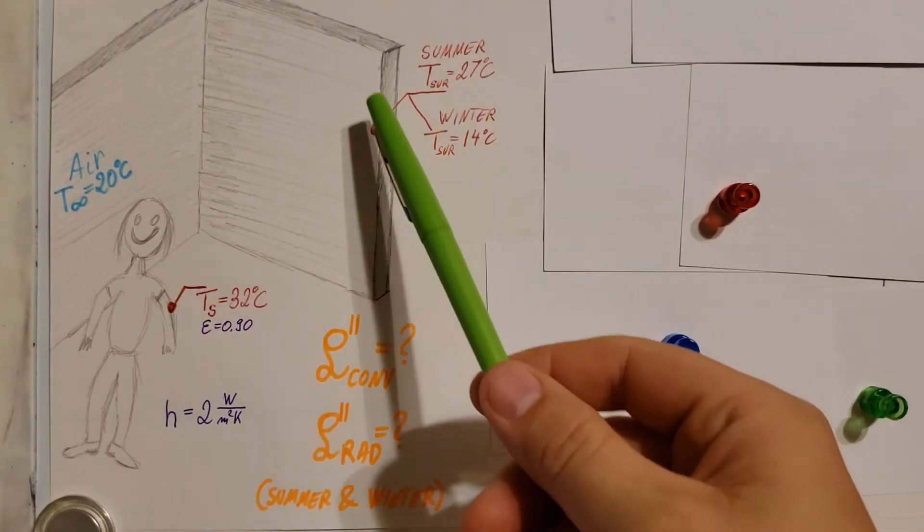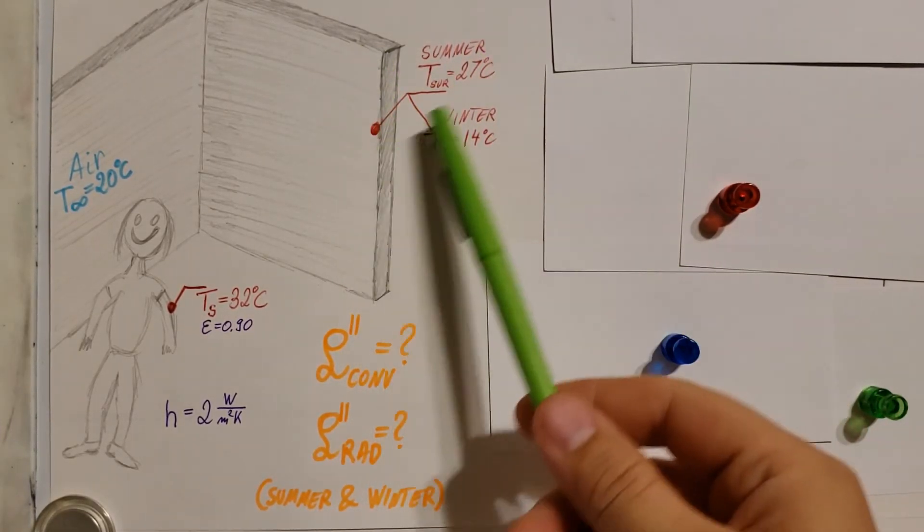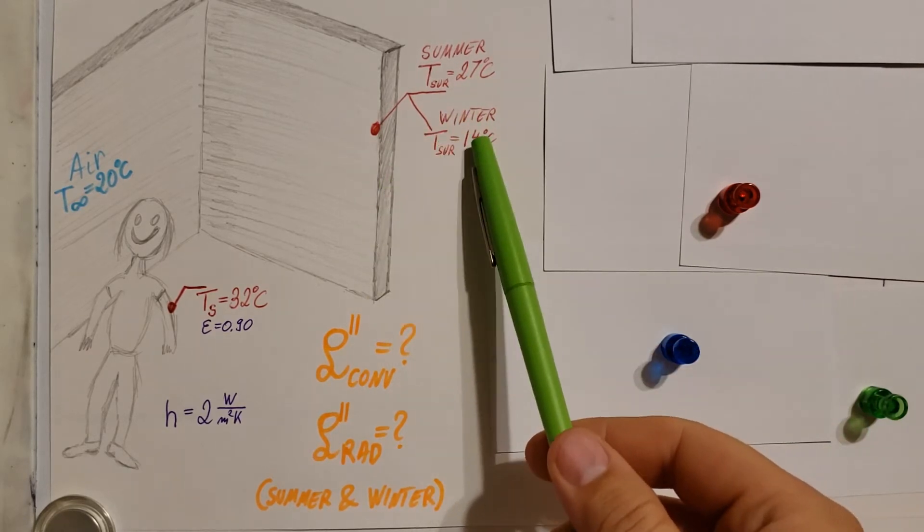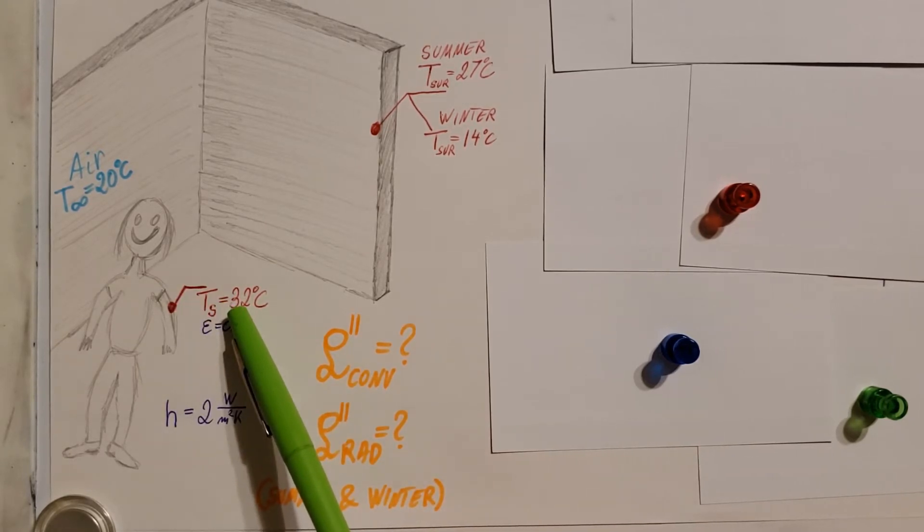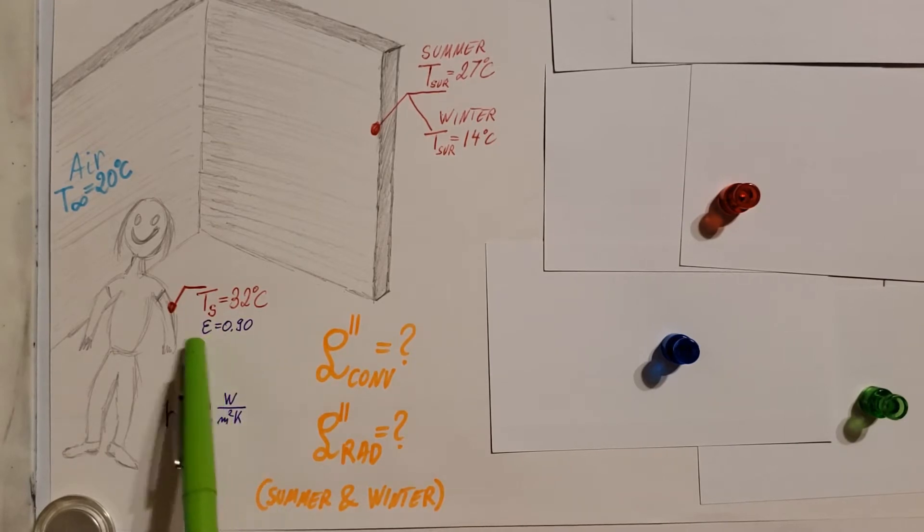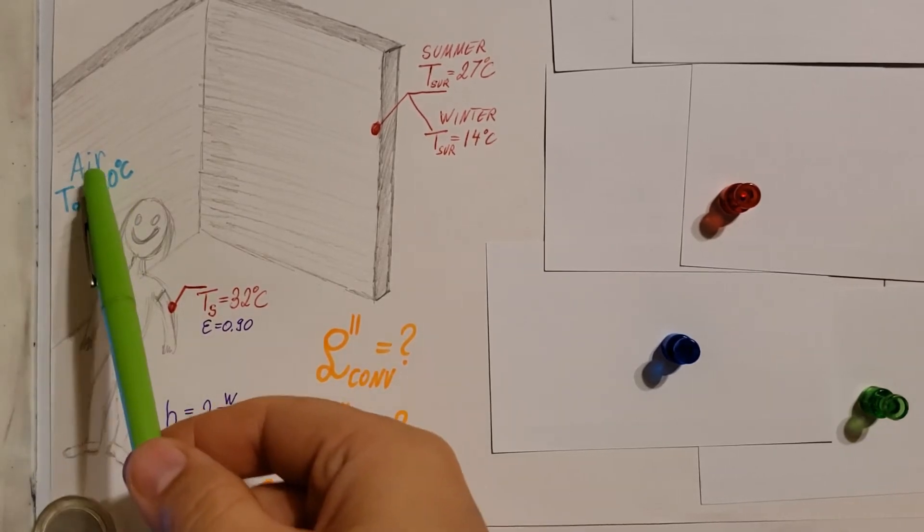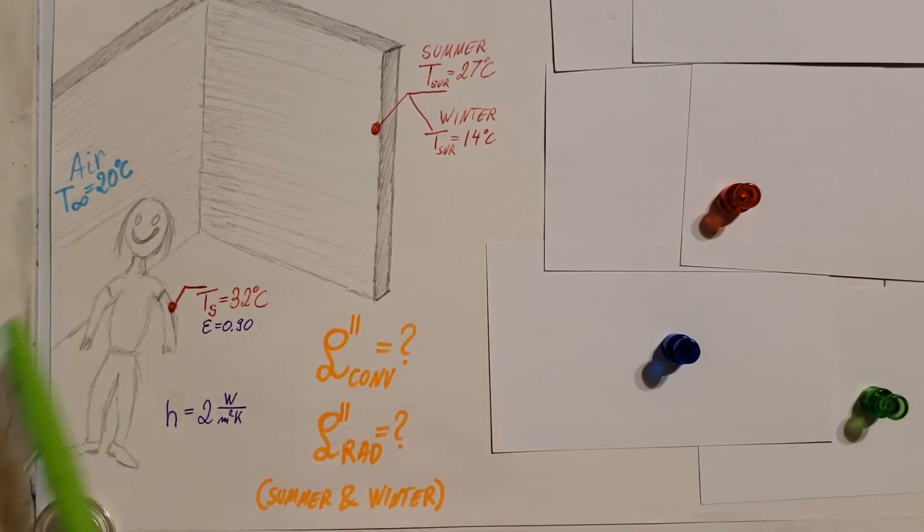We know that in the summer the temperature of the wall is 27 degrees Celsius, in the winter is 14. We also know that the exposed skin of the person is at 32 degrees Celsius. Now we know that the emissivity of the skin is 0.90. We also know that the convection coefficient for the air and between the air and the person is going to be 2 watts per meter square Kelvin. And we're going to have to find why are we having a temperature issue based on how we feel.